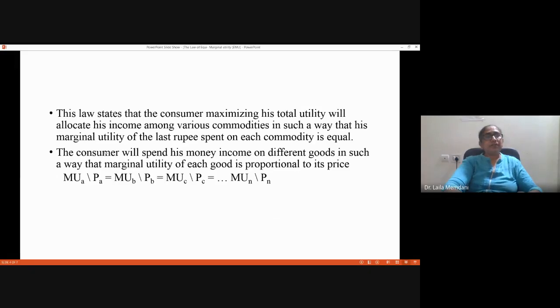Now what does the law say? The law states that the consumer wants to maximize his total utility by allocating his income among various commodities in such a way that the marginal utility that he gets from the last rupee spent on each commodity is equal.